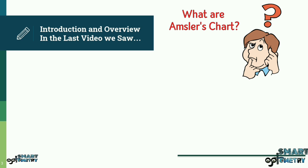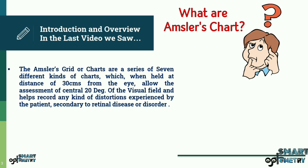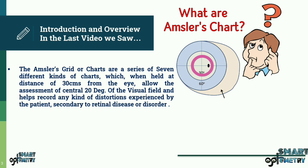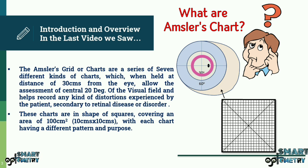In the last video we saw what Amsler's grid charts are. The Amsler's grid or charts are a series of seven different kinds of charts which, when held at a distance of 30 cm from the eye, allow the assessment of the central 20 degrees of the visual field and help record any kind of distortions experienced by the patient secondary to retinal disease or disorder. These charts are in the shape of squares covering an area of 100 cm square, i.e. 10 cm by 10 cm, with each chart having a different pattern and purpose.